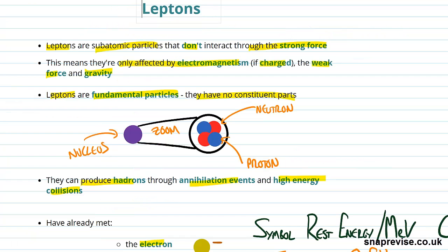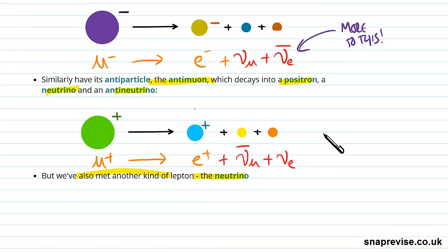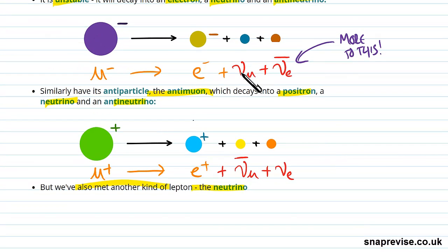For instance, it will explain this confusing thing we had happening here. We had this electron being produced, then this muon neutrino, and then this electron anti-neutrino. Couldn't you have had instead a muon anti-neutrino and an electron neutrino?